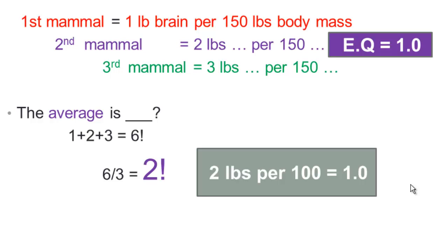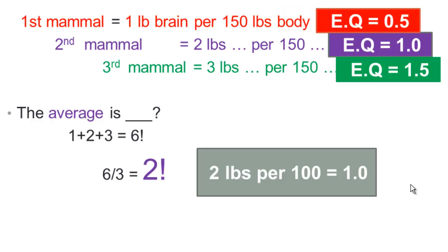So that second mammal with two pounds of brain per 150 pounds of body mass has an EQ of 1.0. It's exactly what's expected for a mammal of its size. The human being in this example has an EQ of 1.5, one and a half times larger than expected for a mammal of its size. And remember, this is a made up example. We're going to look at some more carefully derived evidence shortly. But using this model, the first mammal has an EQ of 0.5. And that means its brain is half the size that would be expected for a mammal of its size. So we've been able to define this index of an EQ and we can quickly and easily then compare brain sizes of different mammals.